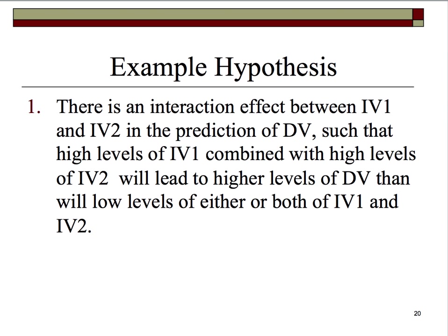Here's an example hypothesis: there is an interaction effect between IV1 and IV2 in the prediction of DV, such that — because we need to explain how the interaction plays out — high levels of IV1 combined with high levels of IV2 will lead to higher levels of DV than will low levels of either or both IV1 and IV2. If you think back to that two-by-two box diagram, that's exactly what this says.